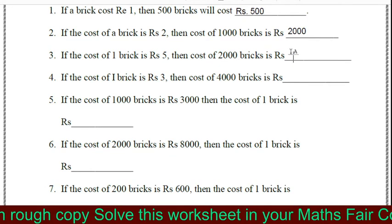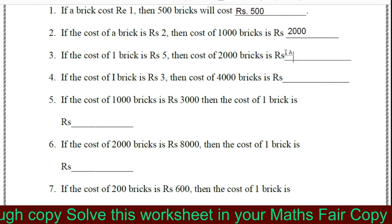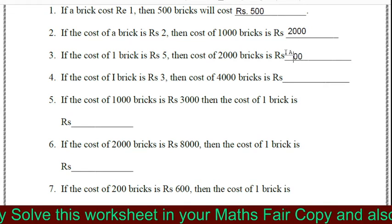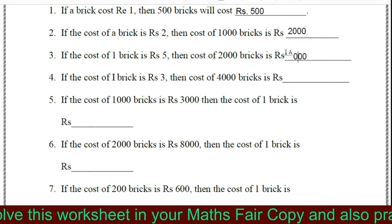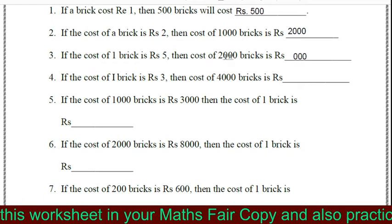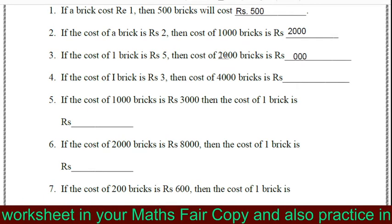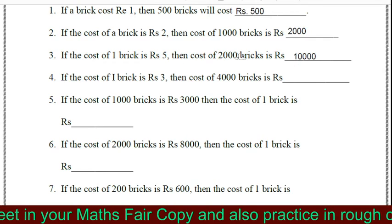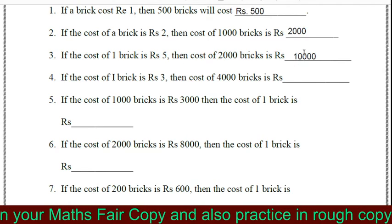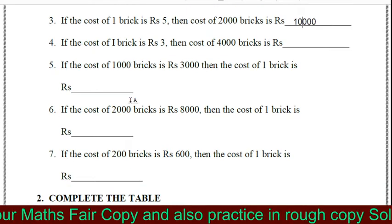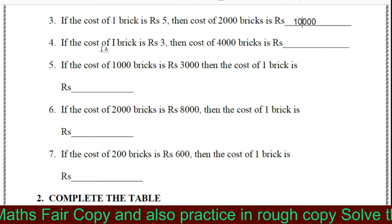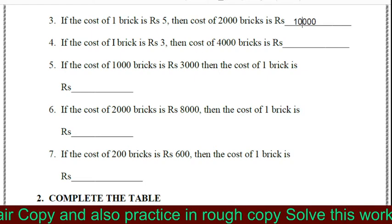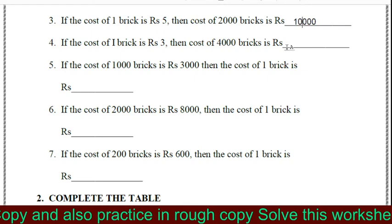We have to write the number of zeros — 1, 2, and 3 — and then multiply 2 and 5, so 2,000 bricks cost rupees 10,000. The next question is: if the cost of 1 brick is rupees 3, then the cost of 4,000 bricks is rupees?